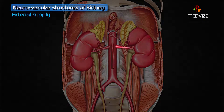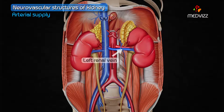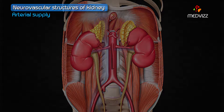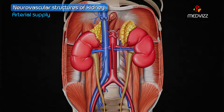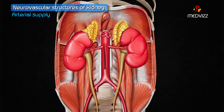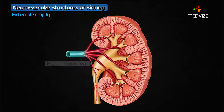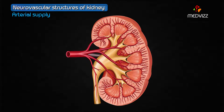The left renal artery passes behind the left renal vein, whereas the right renal artery passes behind the inferior vena cava and the right renal vein. As seen in this picture, each renal artery divides into anterior as well as posterior divisions at or near the hilum of the kidney.